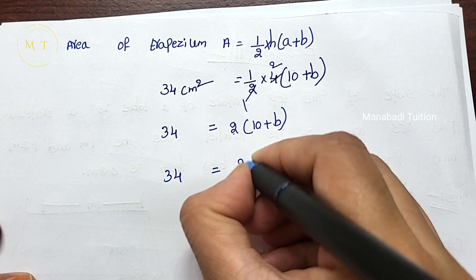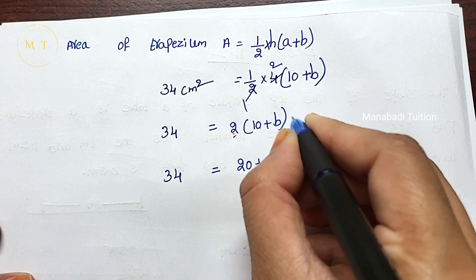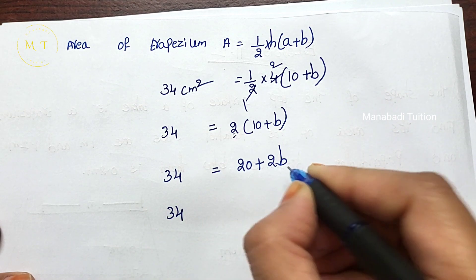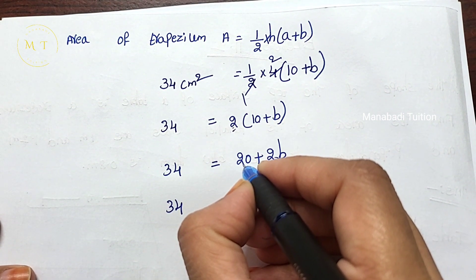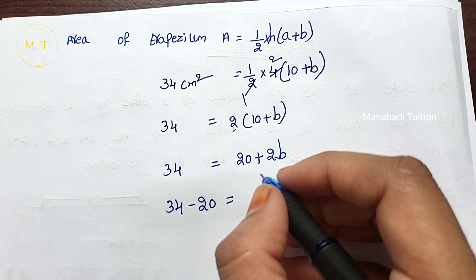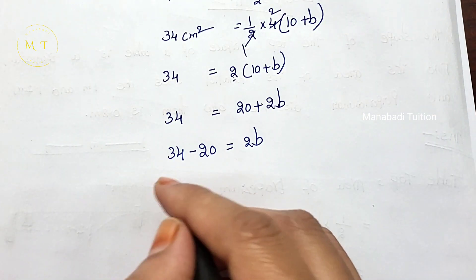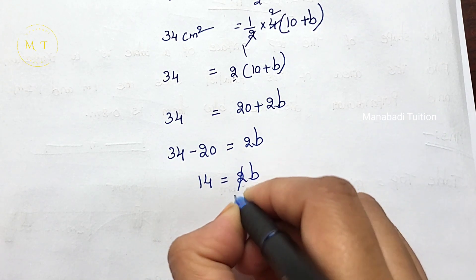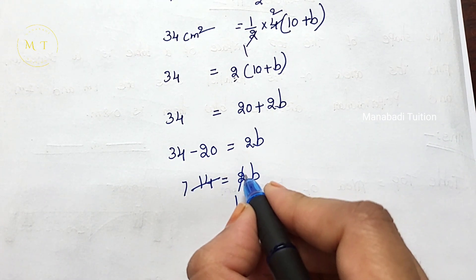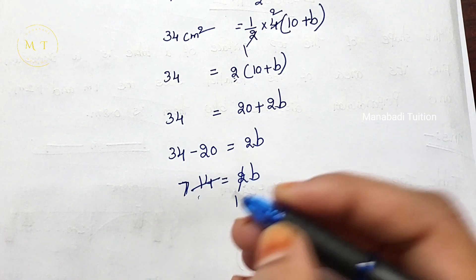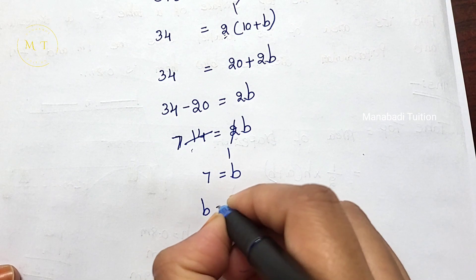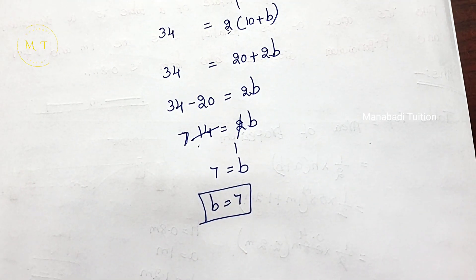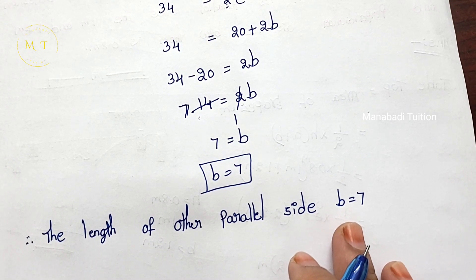34 equals 2 into (10 plus B). Expanding: 34 equals 20 plus 2B. Transposing 20 to the left: 2B equals 34 minus 20, so 2B equals 14. Dividing both sides by 2: B equals 7. Therefore, the length of the other parallel side B equals 7 centimeters.